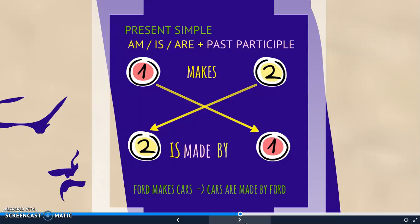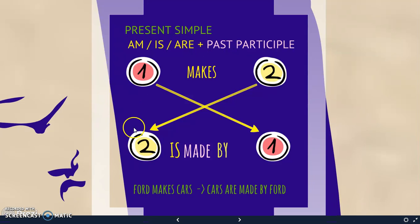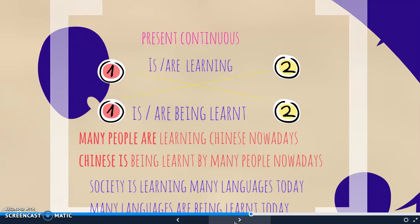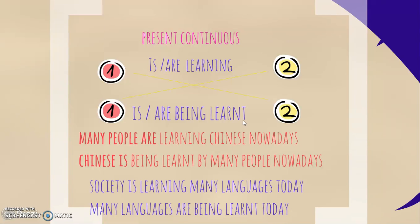In the present simple, we will have the verb 'to be' conjugated in its different forms, and then the past participle of the main verb. So 'makes' changes to 'is made by.' For example: 'Ford makes cars' becomes 'Cars are made by Ford.' In the present continuous, we will have the verb 'to be' as auxiliary, also in the -ing form, followed by the past participle. So 'is/are learning' becomes 'is/are being learned.' For example: 'Many people are learning Chinese nowadays' becomes 'Chinese is being learned by many people nowadays.' 'Society is learning many languages today' becomes 'Many languages are being learned today.'